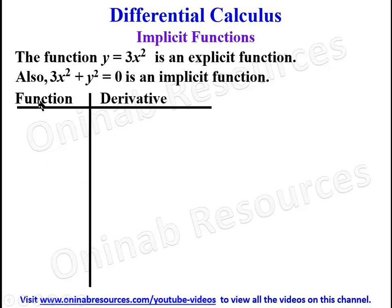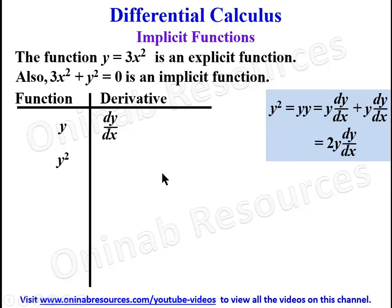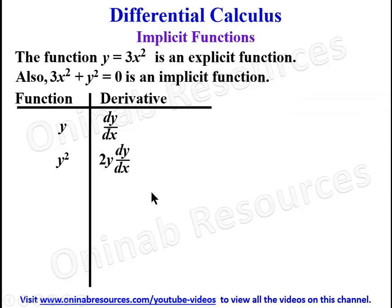In this video we'll be looking at how to differentiate a function of this form. We look at the derivative of y, which is dy/dx. If you have y², we look at it as a product of two functions — y times y — so we apply the product rule. We hold y and differentiate the second y, which gives dy/dx, plus hold the second y and differentiate the first y, giving dy/dx. So y·dy/dx + y·dy/dx gives us 2y·dy/dx, which is the derivative of y².